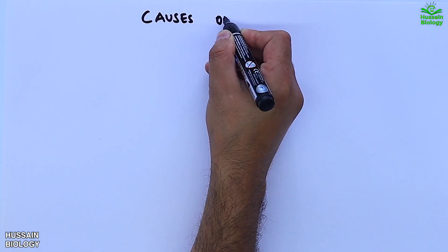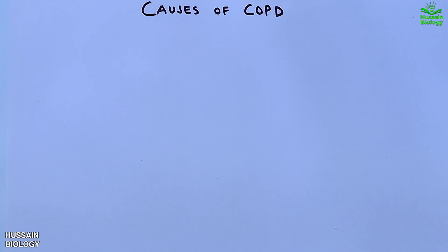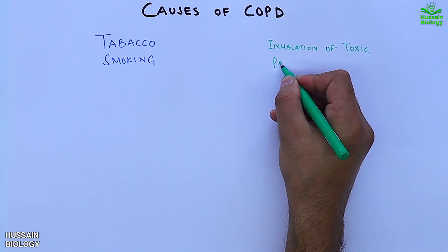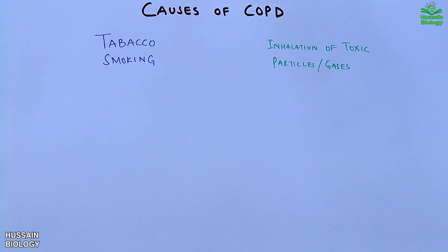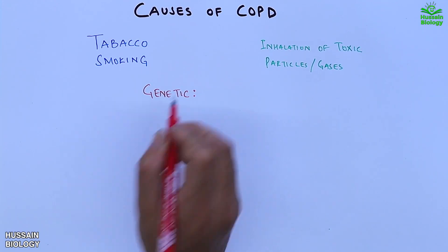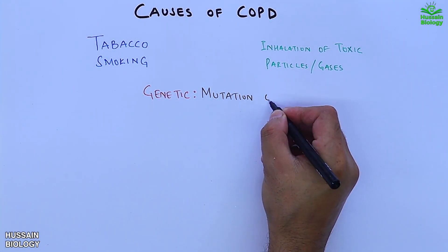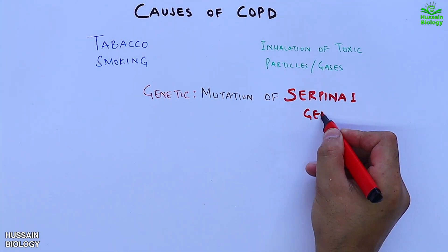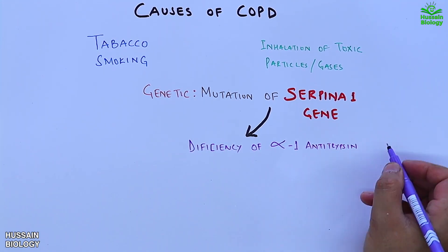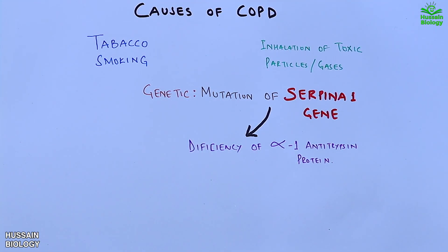The causes of COPD include: first, tobacco smoking; second, inhalation of toxic particles and gases; and third, genetic causes where mutation of the SERPINA1 gene leads to deficiency of the alpha-1 antitrypsin protein.